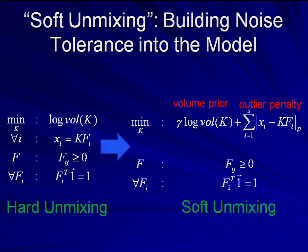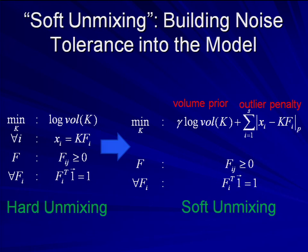What we propose is what we call soft unmixing. The idea is that we drop the hard constraint that every sample must be explained as a convex combination of components — the component matrix K times some fraction F. Instead, the constraint is relaxed into an error term. If a point lies inside the simplex, the error term is zero; if it lies outside, you get a residual. This gives us a way of dealing with simplex fitting where we use the simplex as a kind of prior but remain tolerant to noisy data.